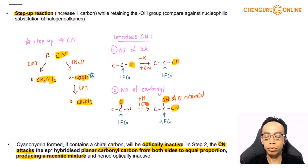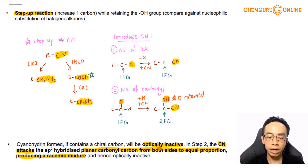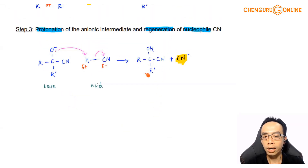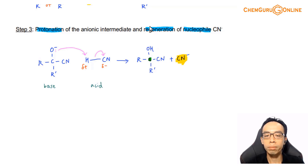The other interesting idea is that even if the product contains a chiral carbon, it can still be optically inactive. If we come back to step 3 and look at the product, this carbon is bonded to 4 different groups: an OH group, a nitrile, R', and R. Since it is bonded to 4 different groups, this carbon is chiral.